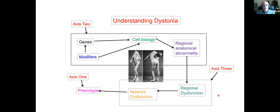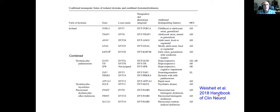I'll say a few words about etiology, but then I'm going to spend most of the time talking about pathophysiology. This is a list of genetic causes as of the publication of a handbook in 2018 — there are always new genes being identified. This divides those genes into those that lead to isolated dystonia, where the disorder is only dystonia, or combined, where you have dystonia and Parkinsonism or dystonia plus myoclonus.